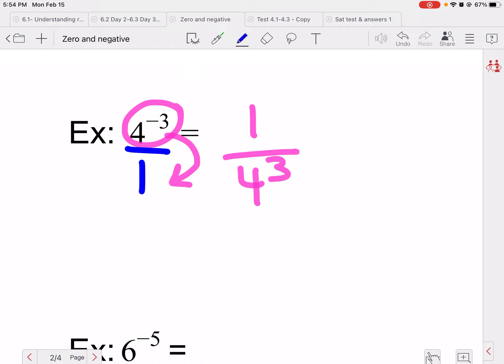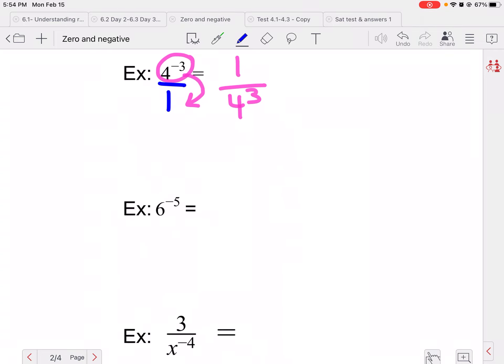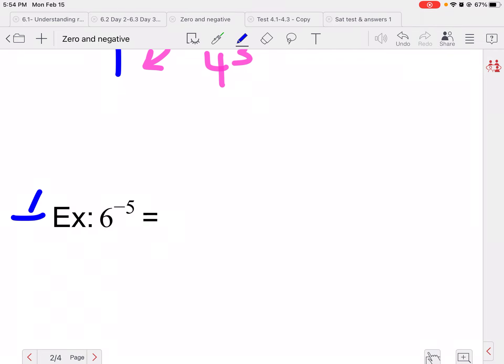Now, some of you are going to say, Miss Haas, I just flip it. Well, you only flip the stuff with the negative exponent. If there's other stuff with it, which we'll learn later, you only move the stuff with the negative exponent. If it has a positive exponent, leave it alone. So this is one over 4 to the third.